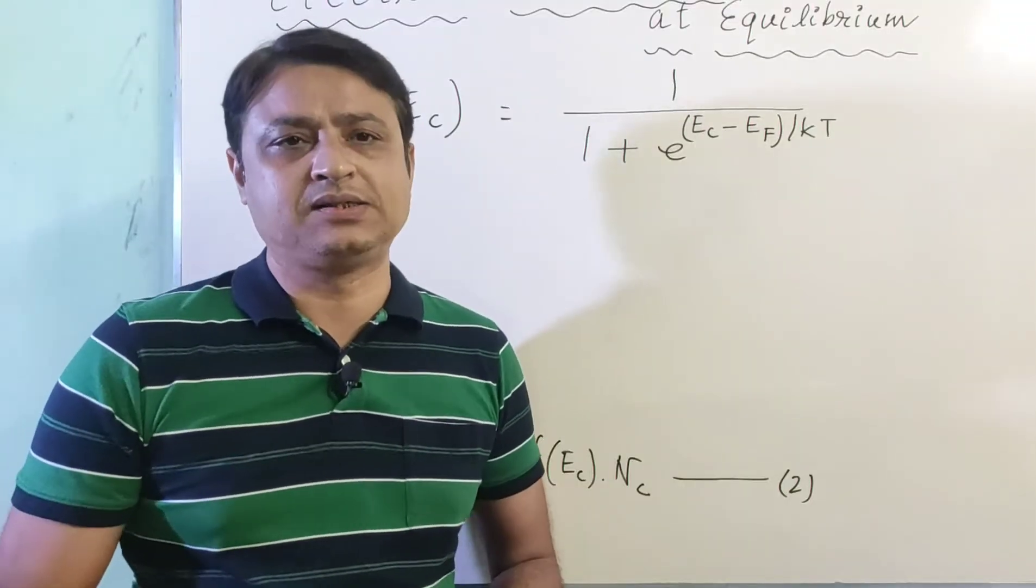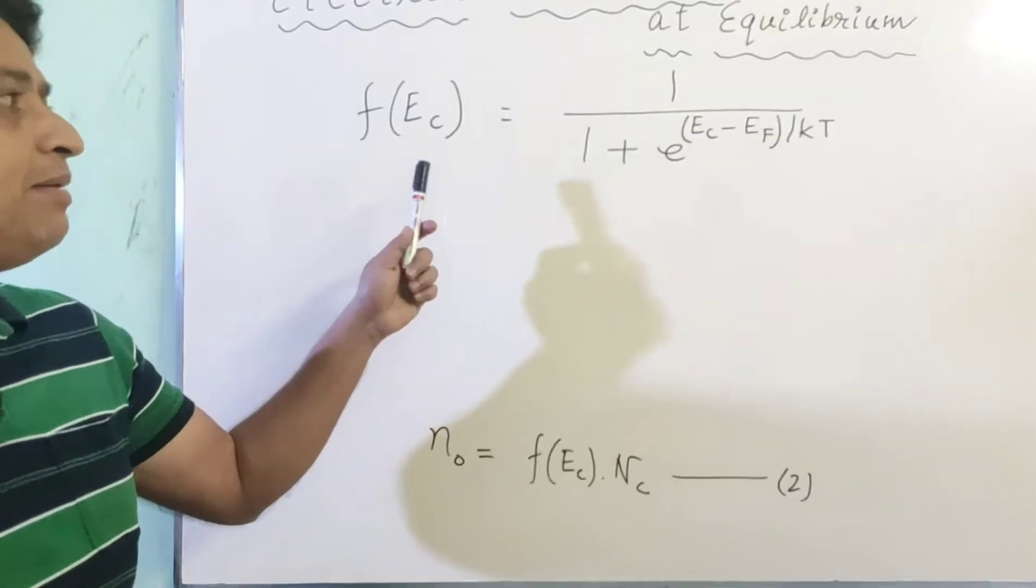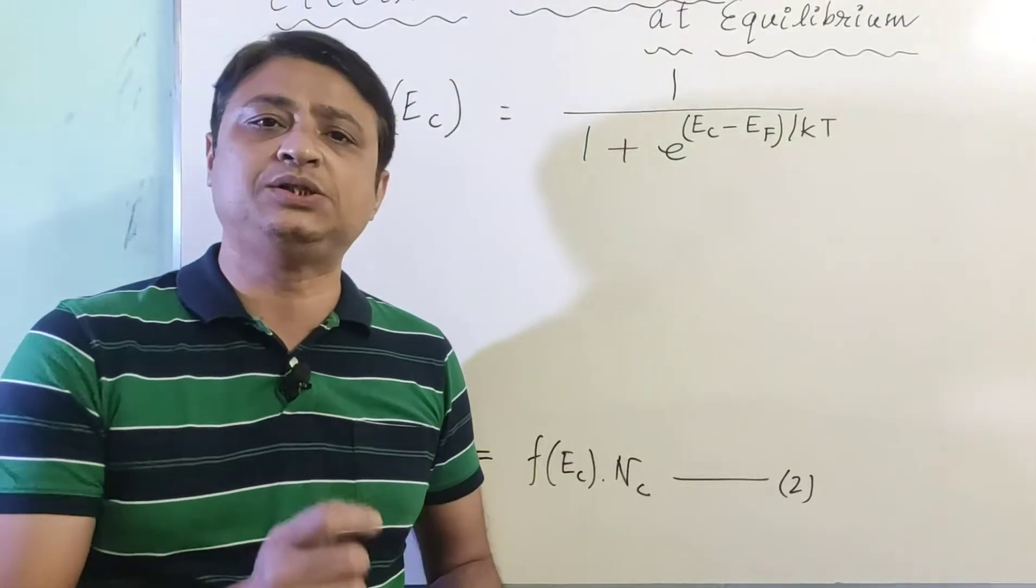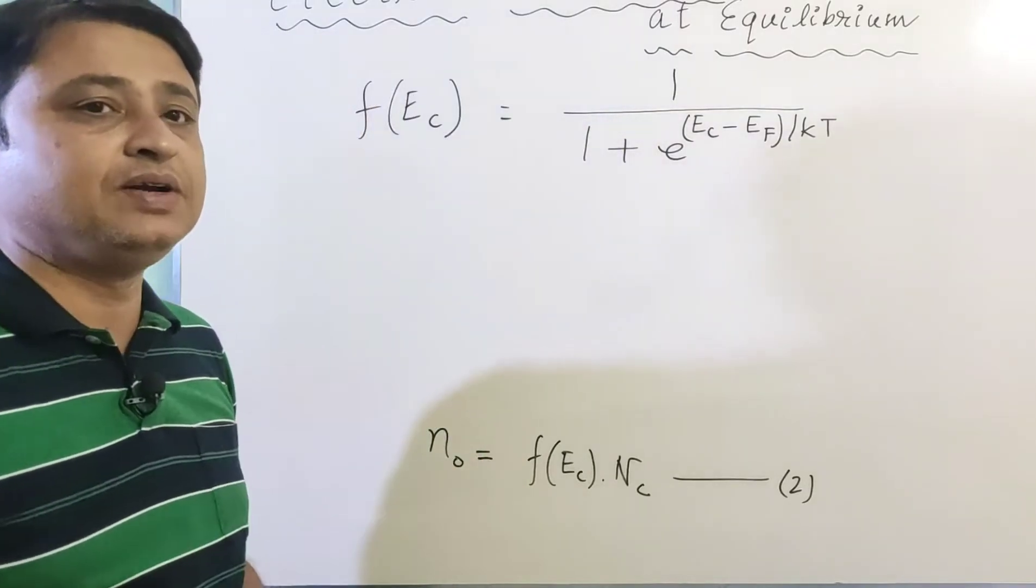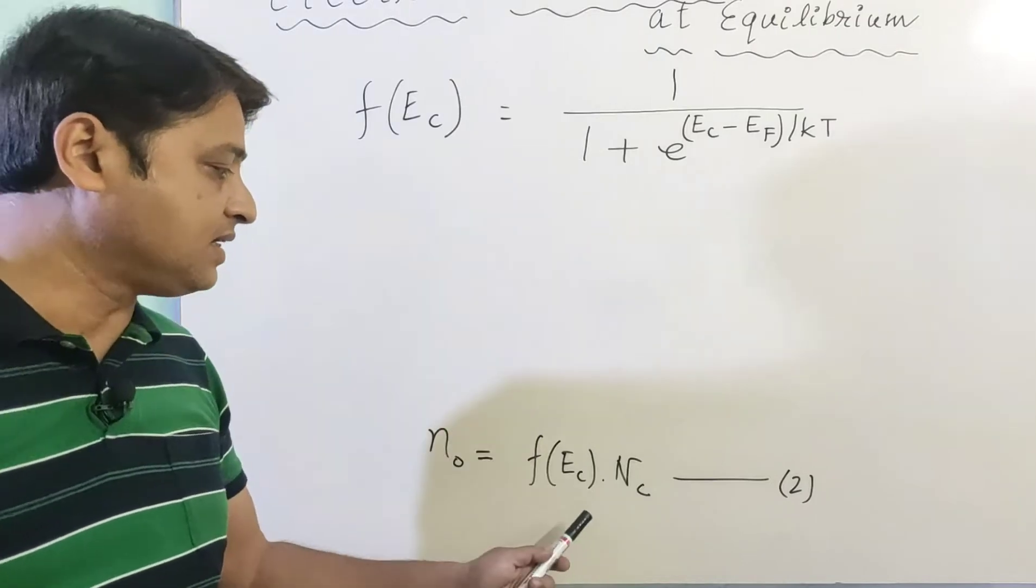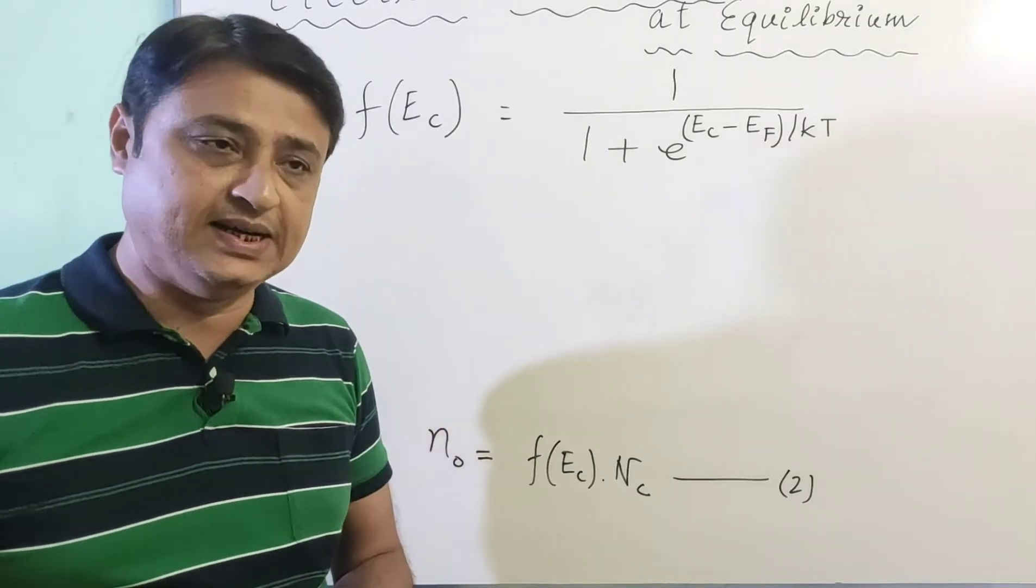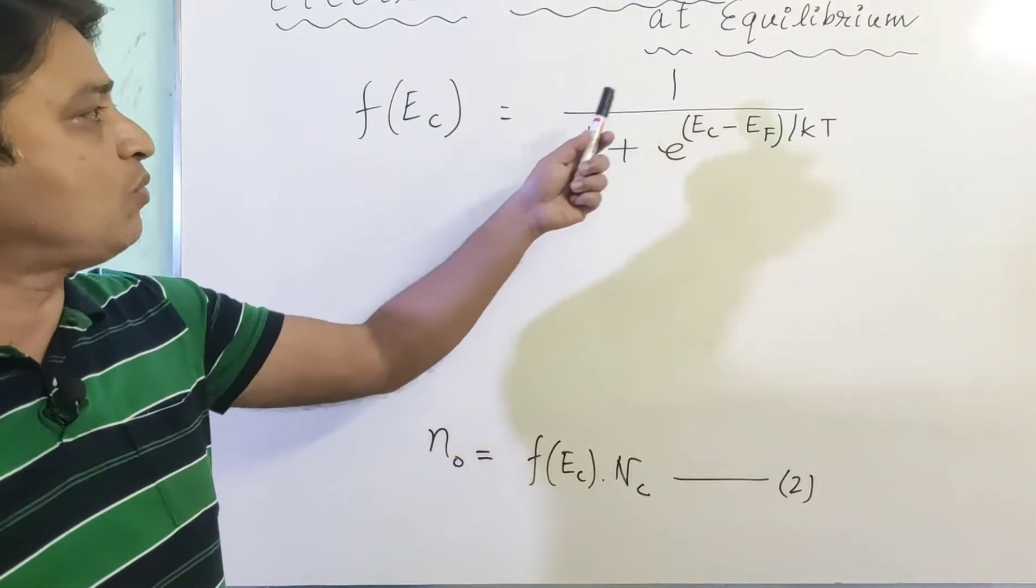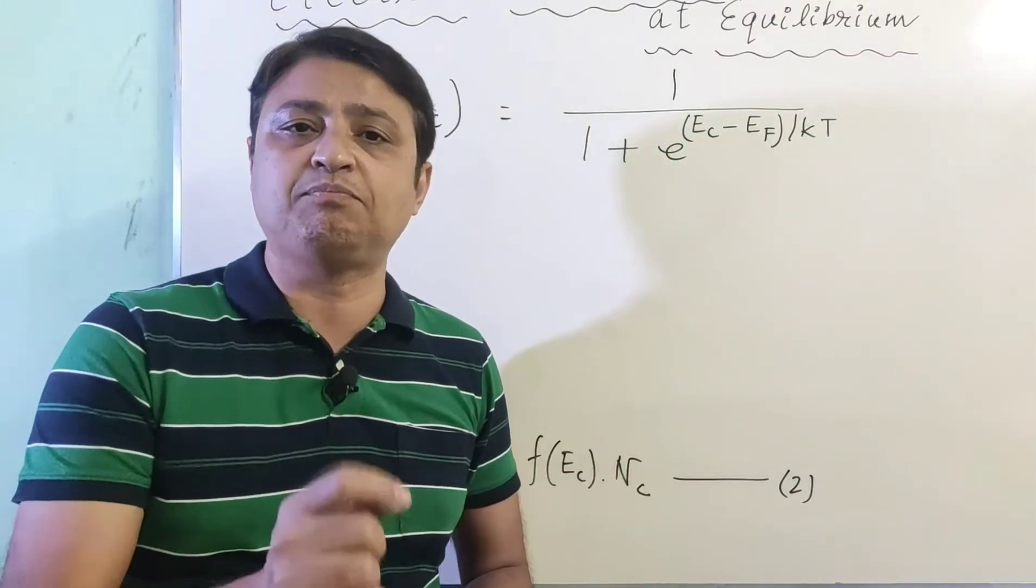From the Fermi-Dirac distribution function, we know f(E) = 1 / (1 + e^((E-Ef)/kT)). Since we need f(Ec), this can be written as f(Ec) = 1 / (1 + e^((Ec-Ef)/kT)).